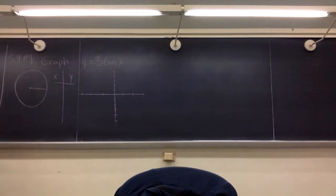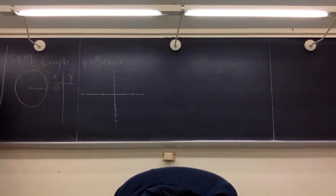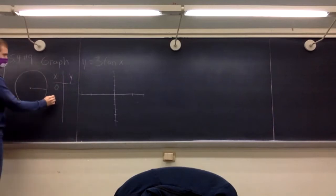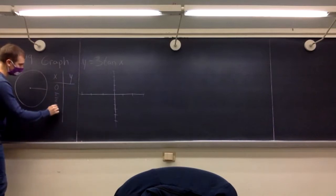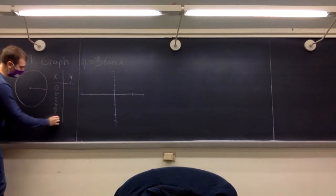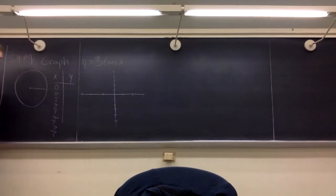We're working with trig functions, and hopefully we've been working with them long enough that we know the typical angles we should pick. We've got angles of zero, which are very easy. Pi over two is a very good angle, and then you've got pi over four, pi over three, pi over six, and then the negatives of these, so you can spread out from zero.